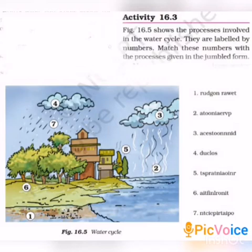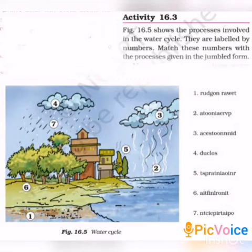Let us review the activity. The first process is groundwater. The second is evaporation — the surface water present in seas, rivers, or ponds gets evaporated due to the heat of the sun. The third is condensation — when water vapour comes in contact with cooler areas in the atmosphere, it gets condensed.